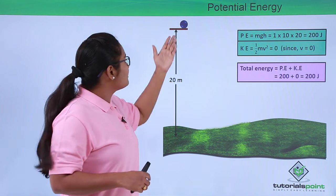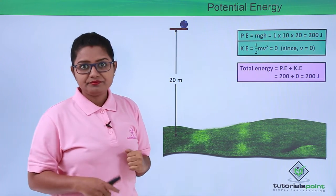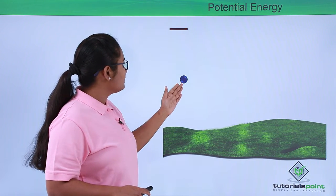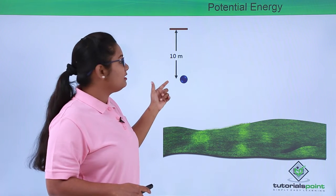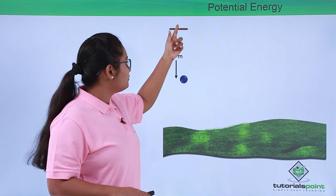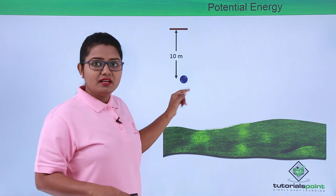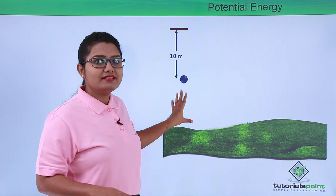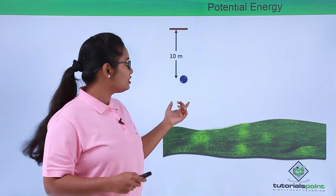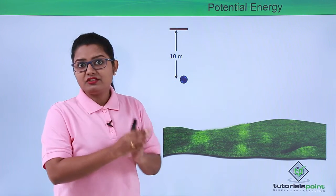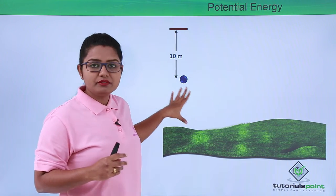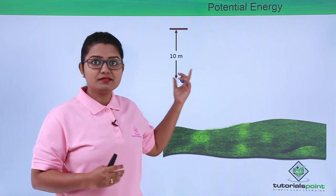Now let us release the ball from this height. What will happen? The height of the ball will reduce. Let us say it has reduced to 10 meters. Since the ball was at a height of 20 meters above the ground and has already fallen down to 10 meters, it is now at a height of 10 meters. At this position, the ball must be having both kinetic energy and potential energy, since it is at a certain height above the ground and also has some velocity with which it is moving down.